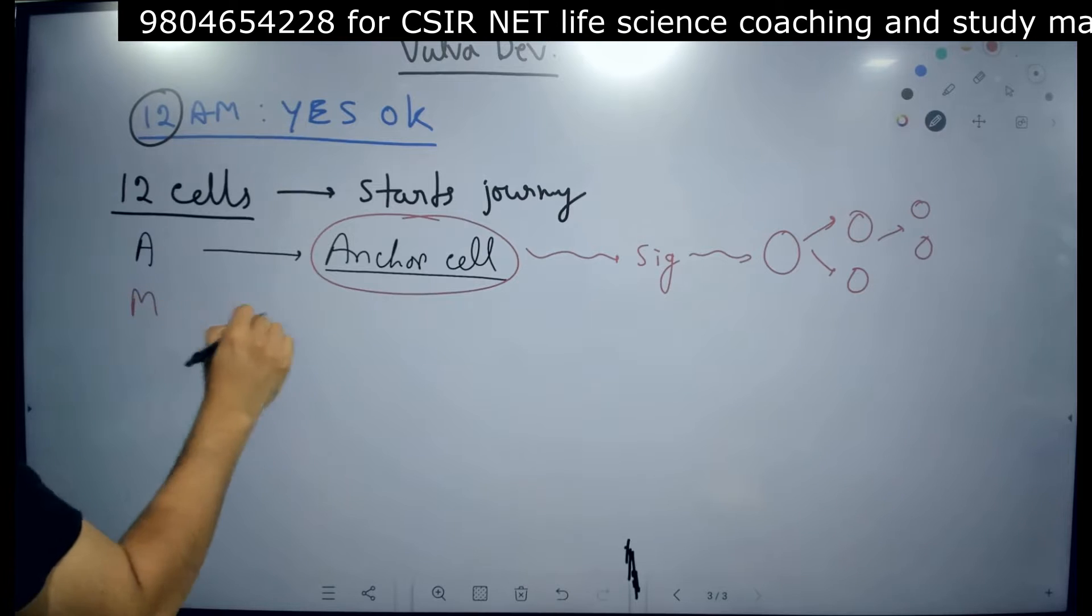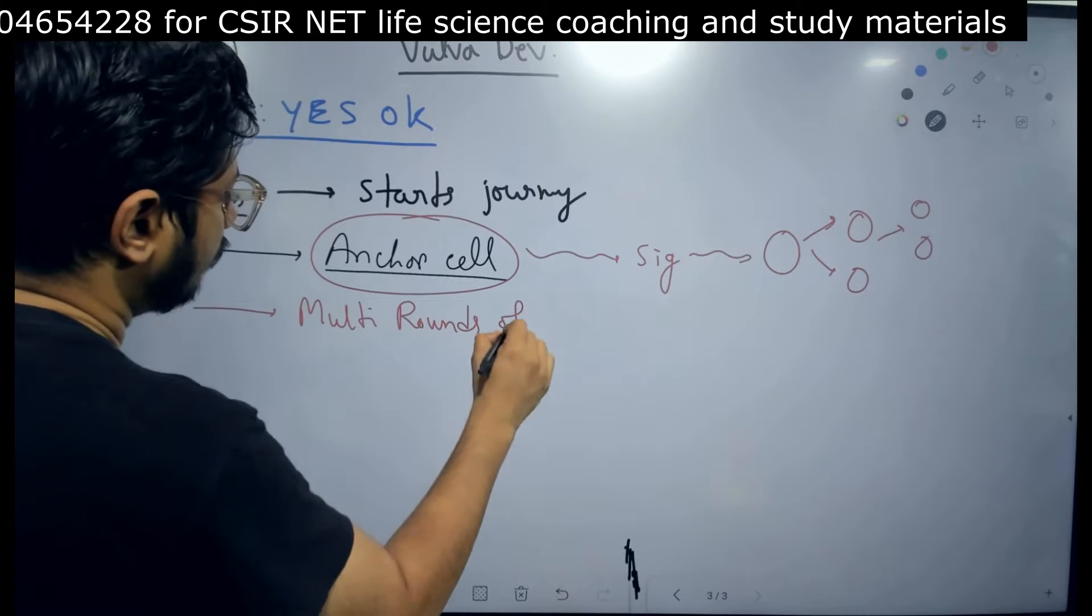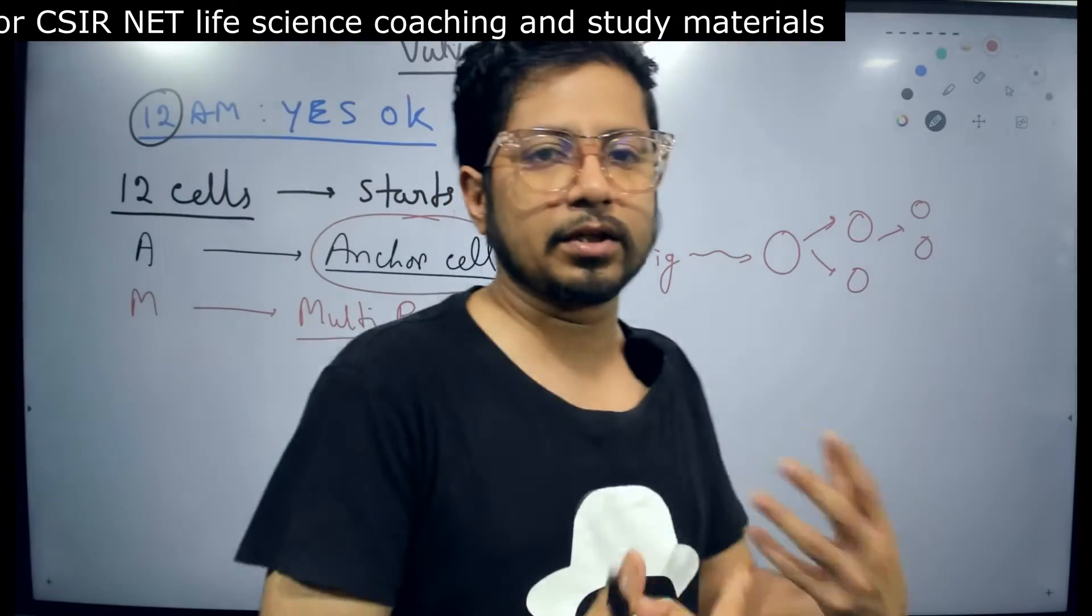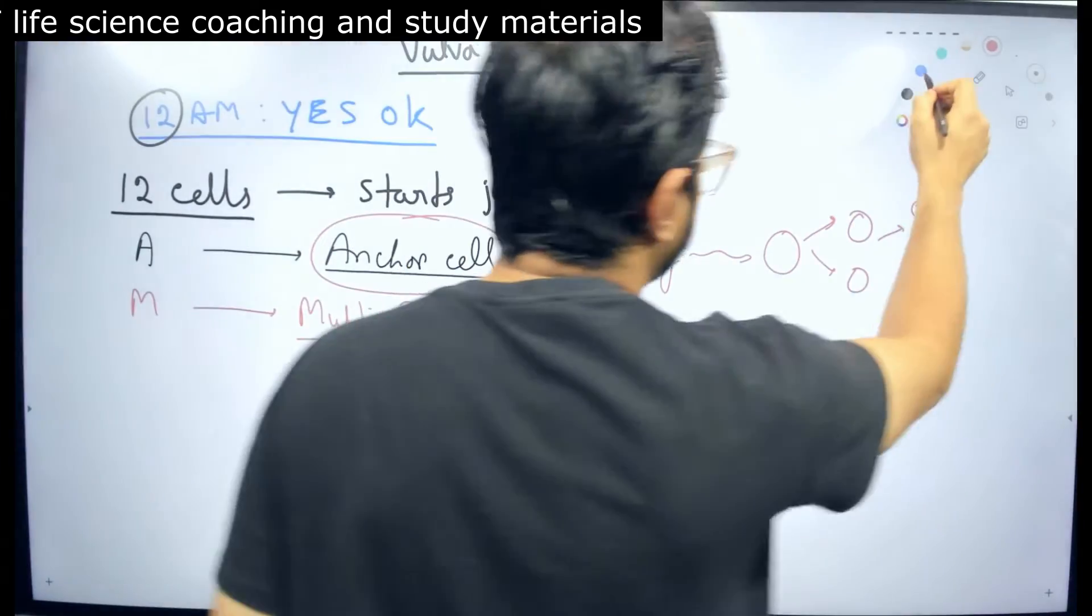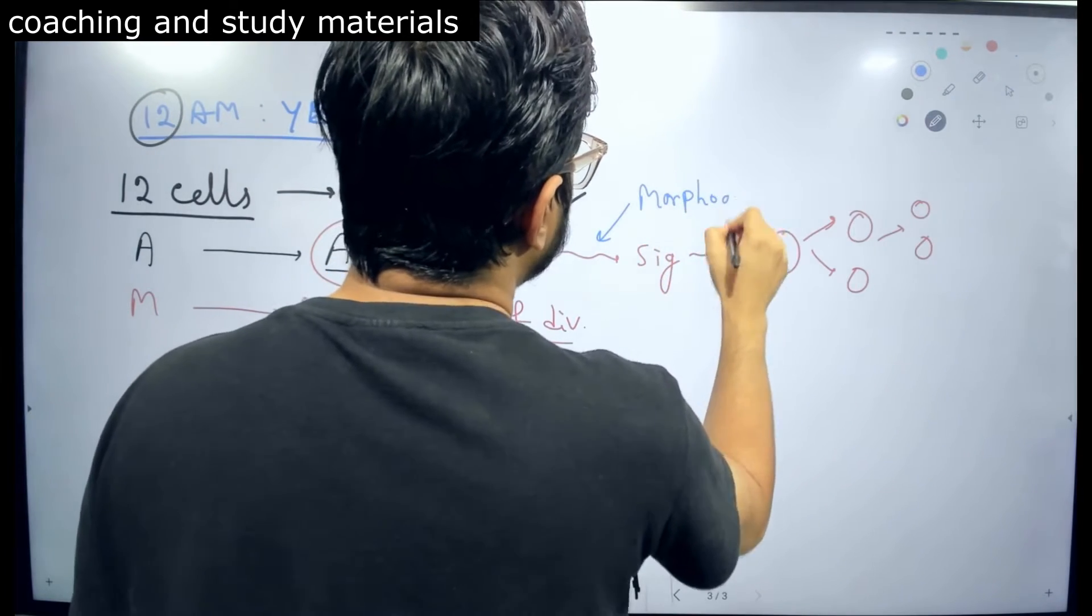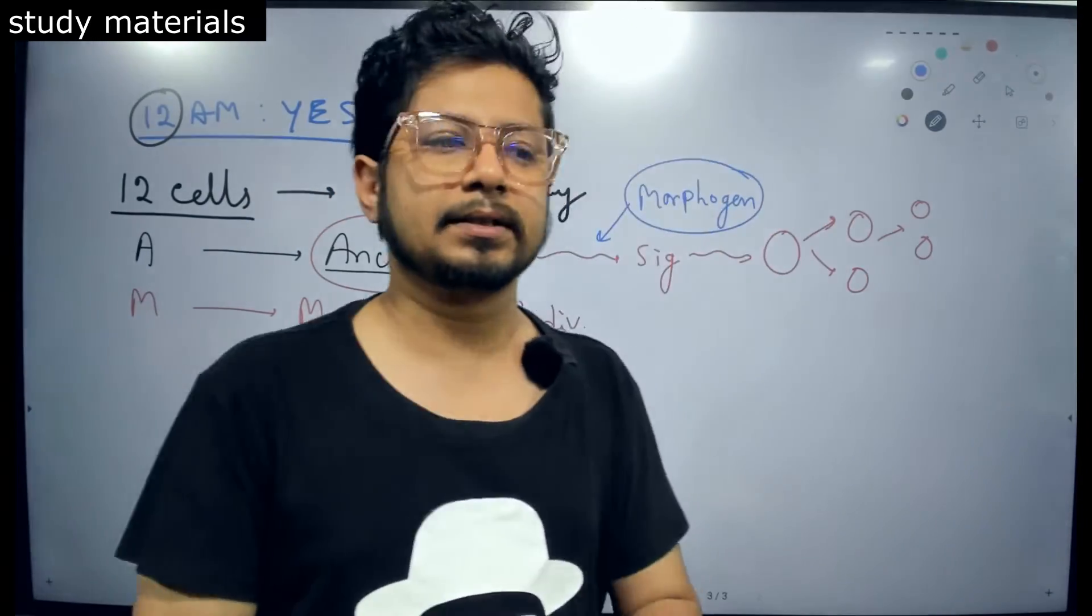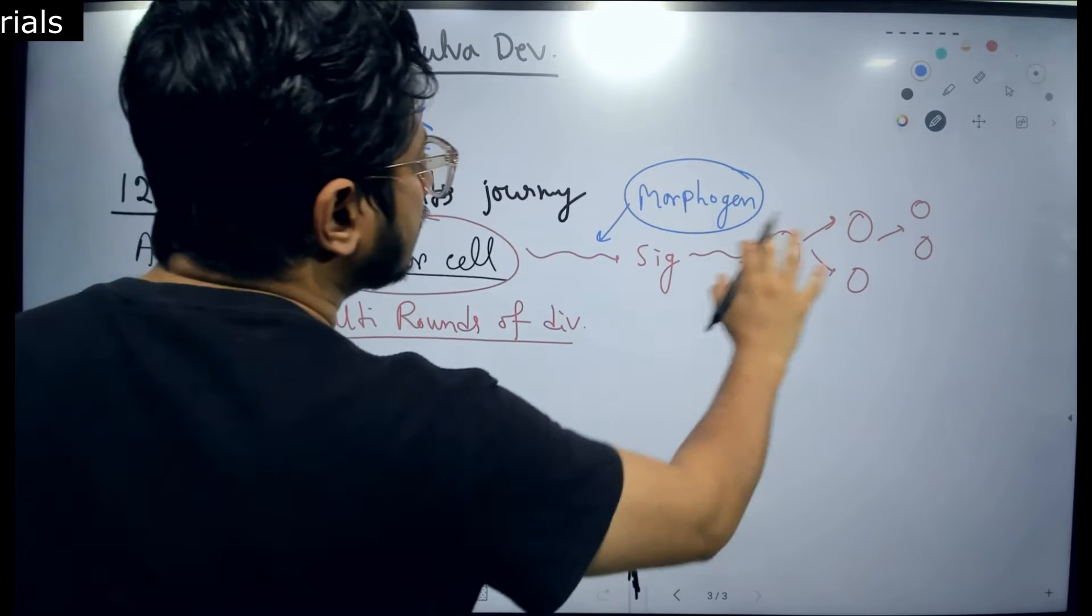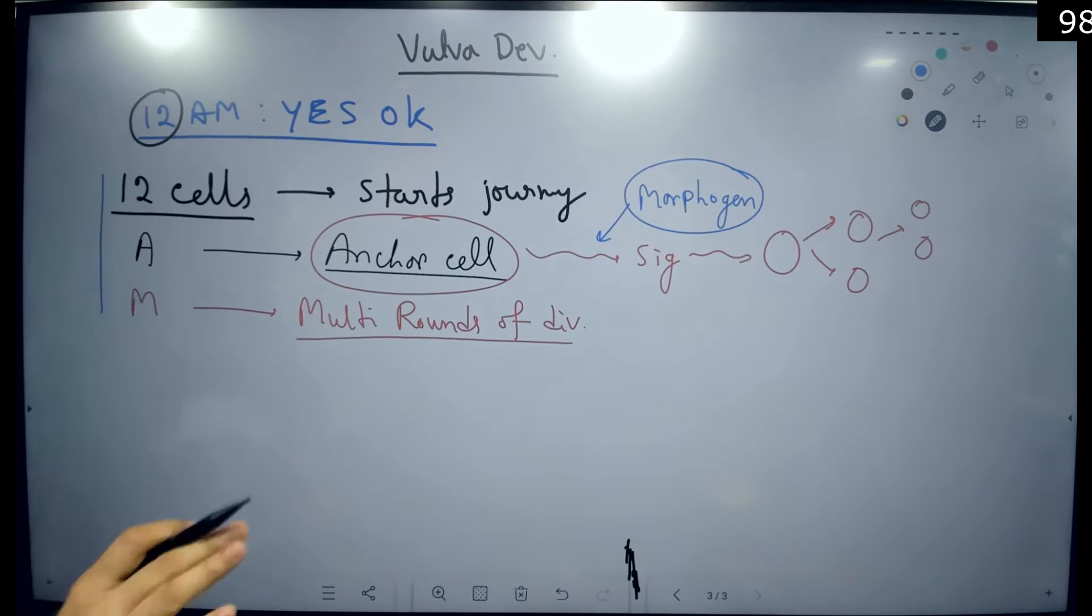Then M, multi rounds of cell division. Multi rounds of division involved in the process of vulva development. And this differentiation of the cell is very critical. Once the anchor cell releases the signaling molecule, which is a morphogen by the way, the morphogen is a chemical compound which provides signal to a cell. And depending upon its concentration gradient, the outcome of the signaling also alters. Upon releasing of morphogen by anchor cells, signaling is done. Multiple rounds of cell division will be achieved.